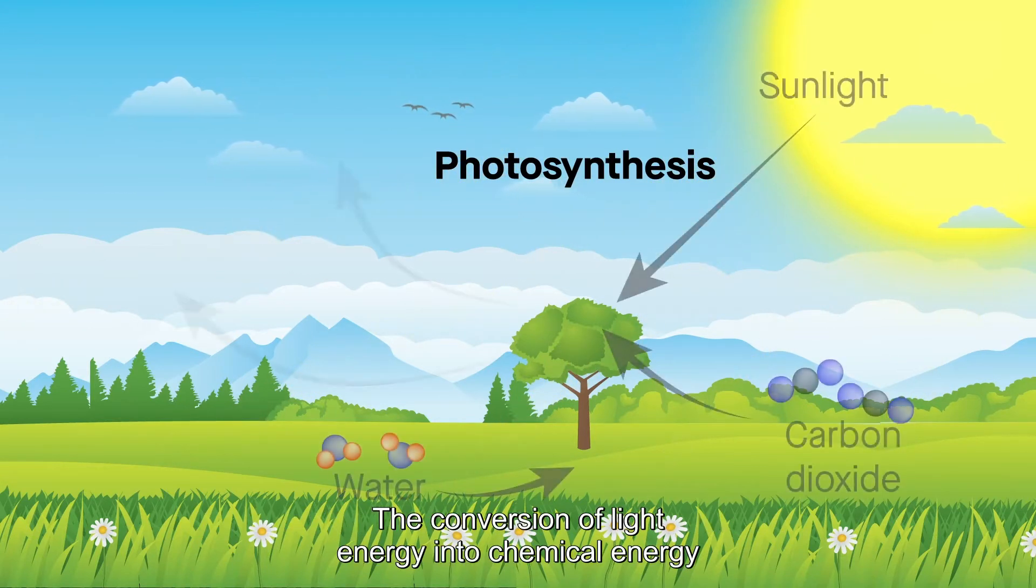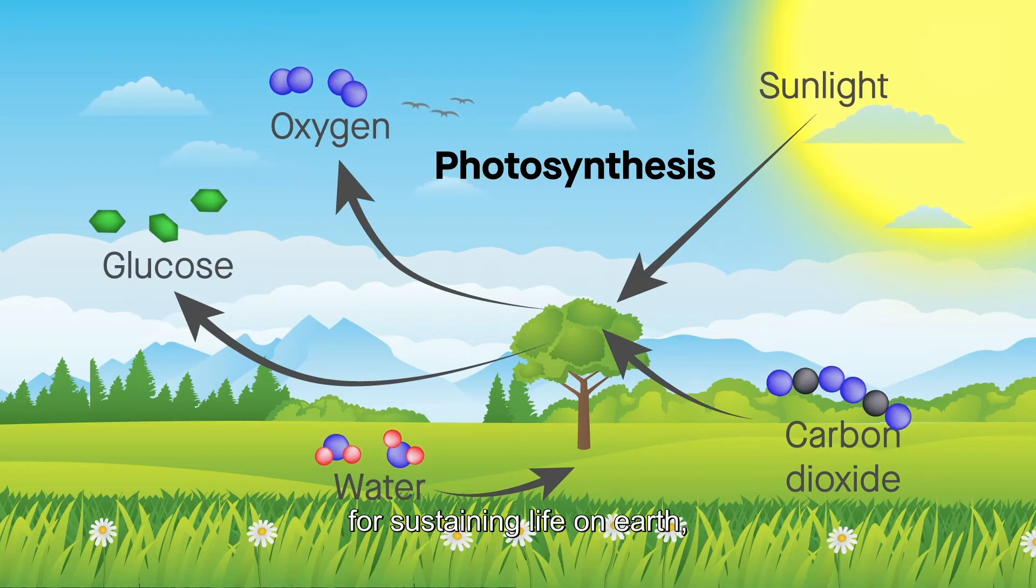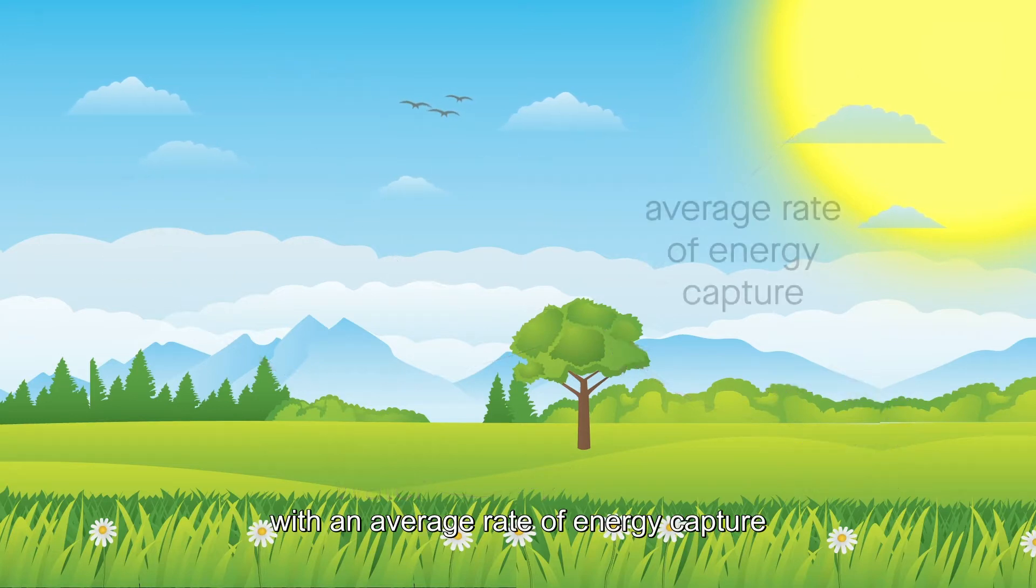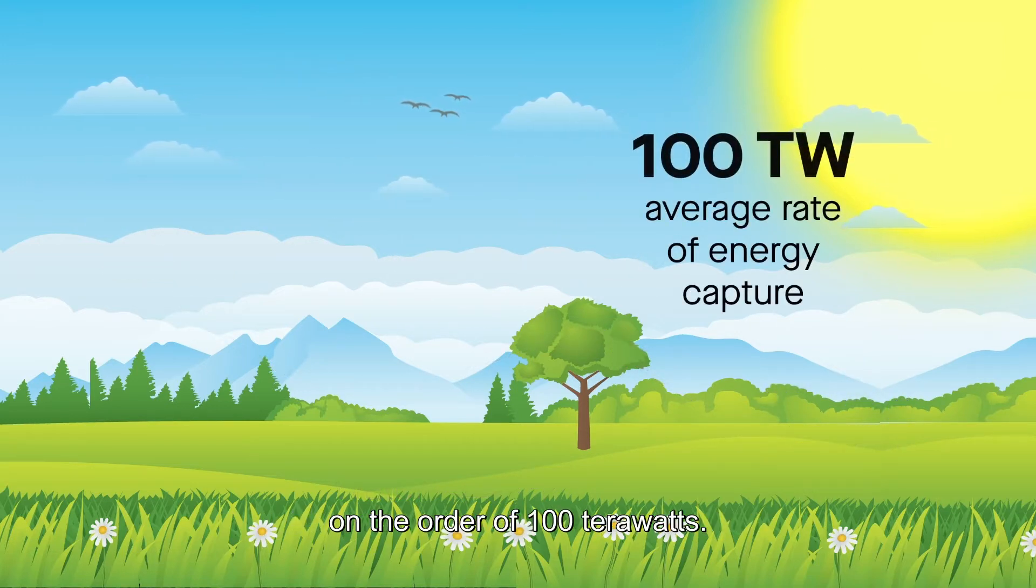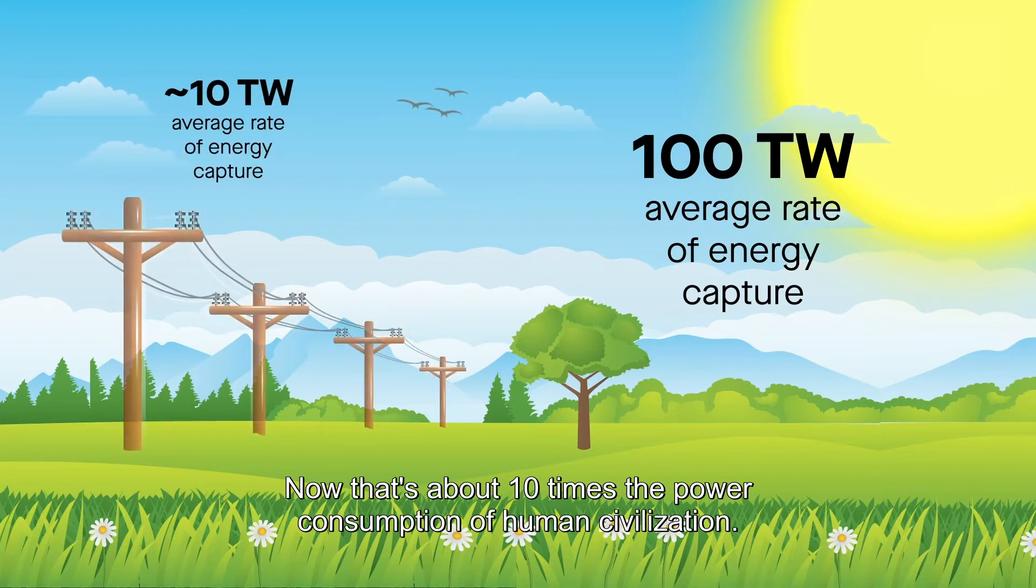The conversion of light energy into chemical energy through photosynthesis supplies most of the energy necessary for sustaining life on earth, with an average rate of energy capture on the order of 100 terawatts. Now that's about 10 times the power consumption of human civilization.